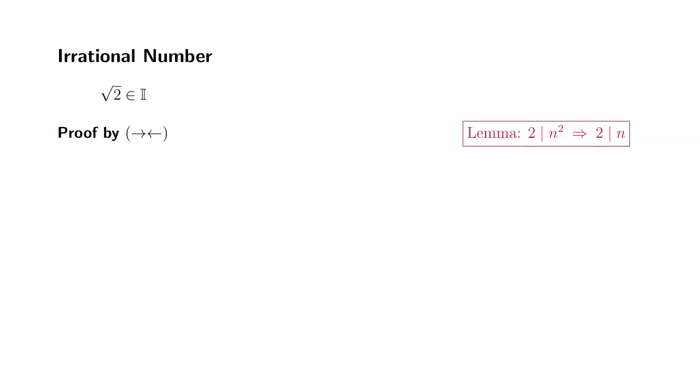So as usual, for contradiction, we're going to assume the opposite. So we're going to assume that the square root of 2 is rational. By the definition of rational number or a positive rational number, we know that there exists natural numbers m and n, so that the square root of 2 can be written as m over n.